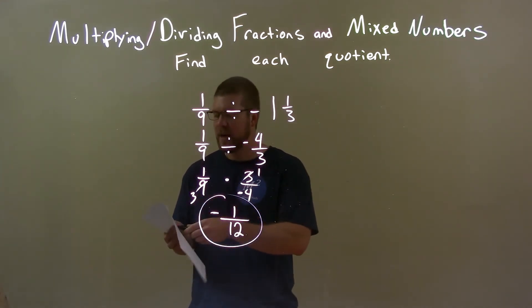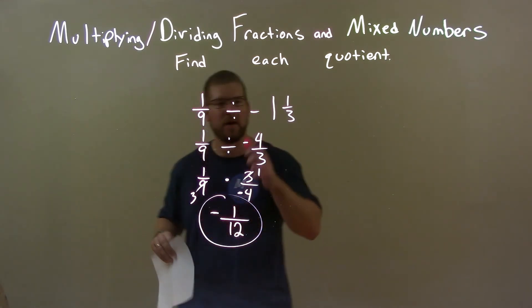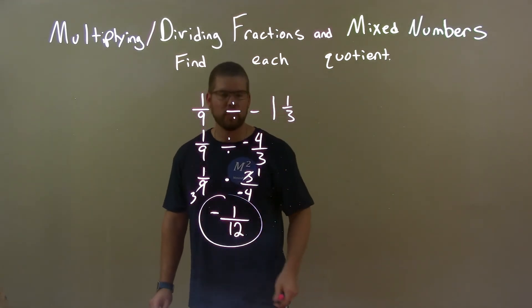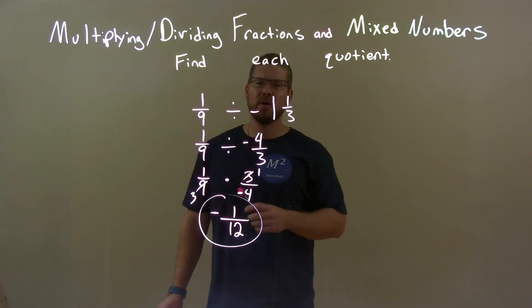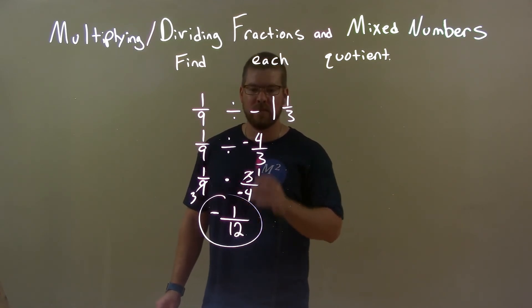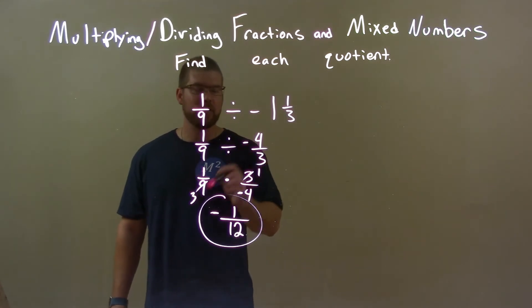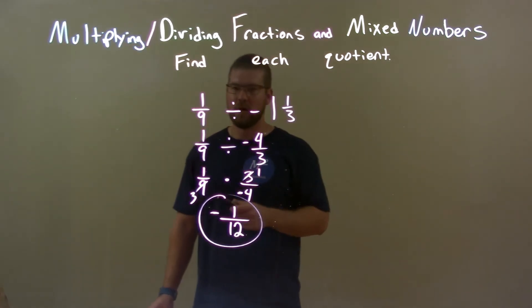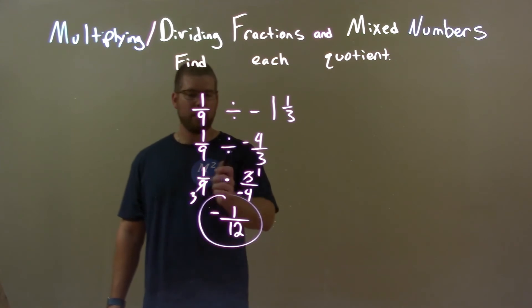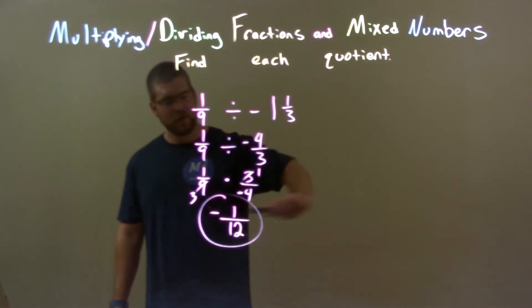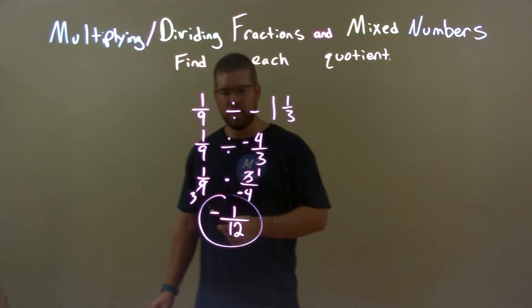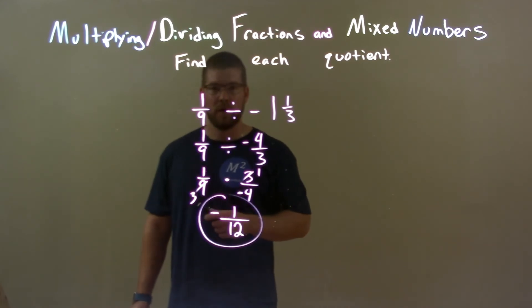So, quick recap. We're given 1 ninth divided by negative 1 and 1 third. I converted negative 1 and 1 third to be an improper fraction, negative 4 thirds. Dividing, I hate it. So, we're going to multiply. Flip that to be a negative 3 over 4. Then, simplify it a little bit. Multiply it across the numerator. Multiply it across the denominator. And we got our final answer of negative 1 twelfth.